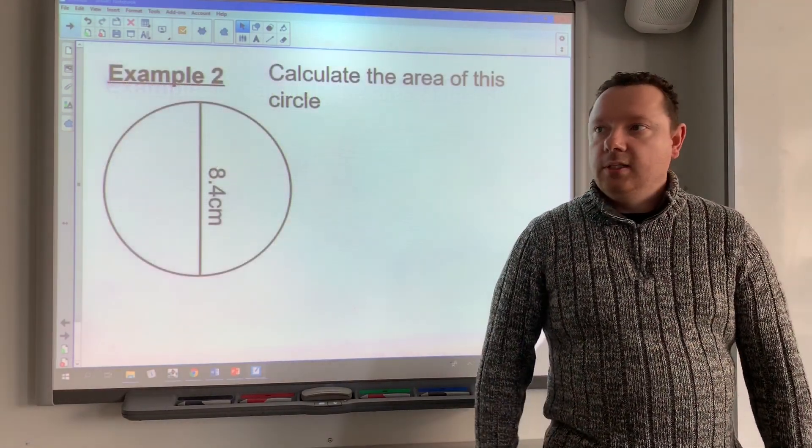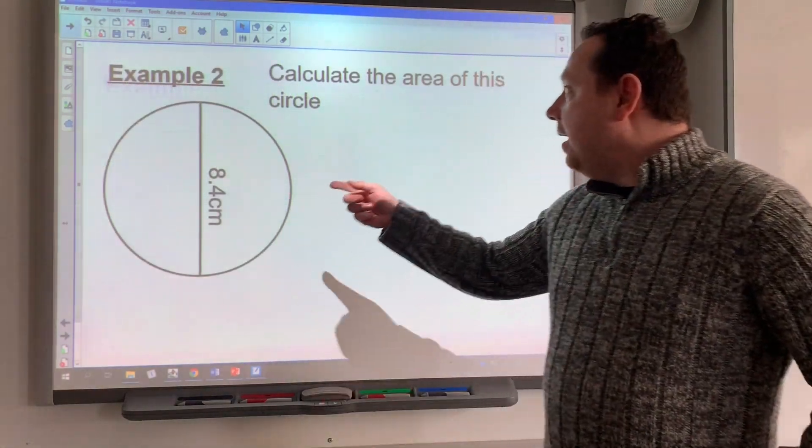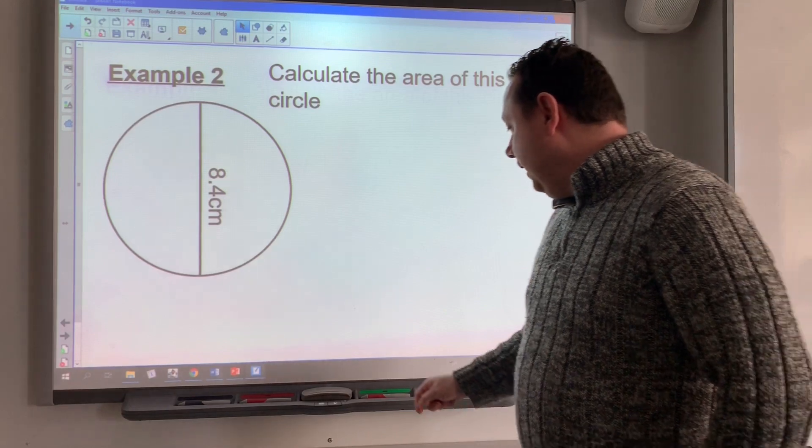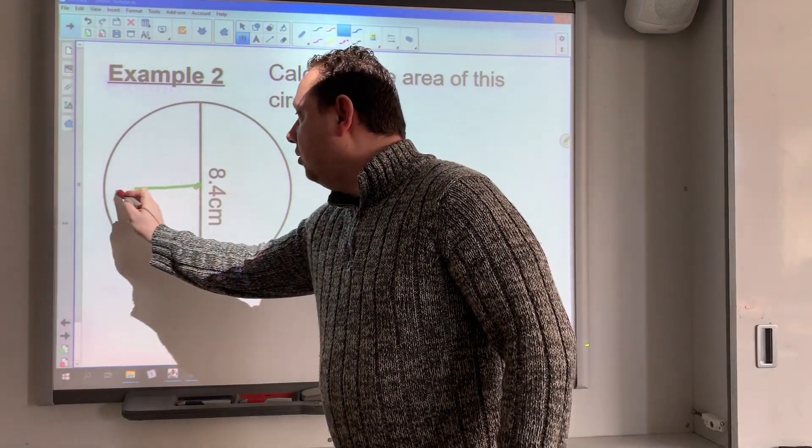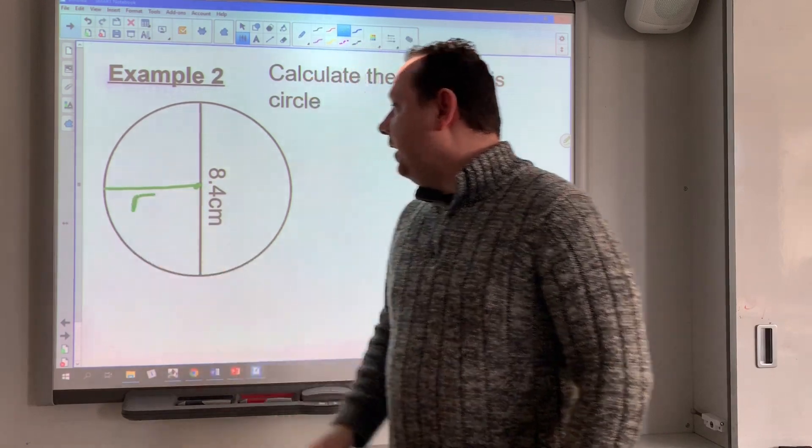Example 2: This time we're given the diameter, but we still have to calculate the area. I'm going to mark on my circle the radius. Remember, the radius is half the diameter.